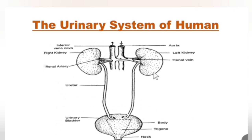Starting with the main organ — the kidneys. The kidneys are bean-shaped structures that contain nephrons, which are the filtration units. The nephrons are actually responsible for producing urine.